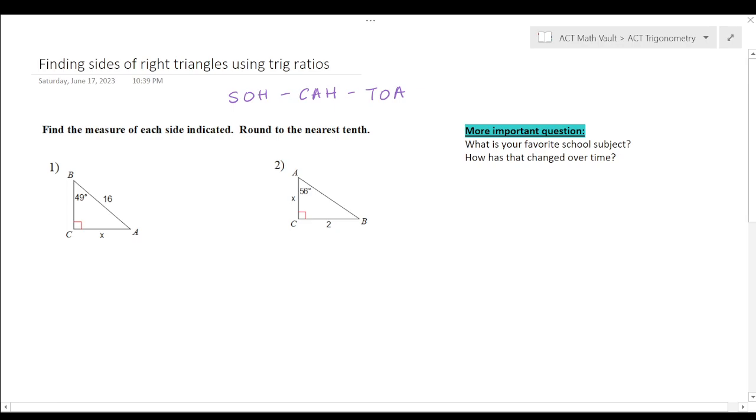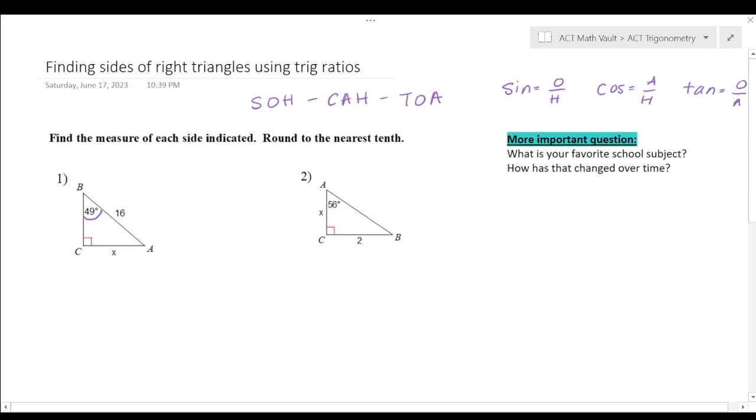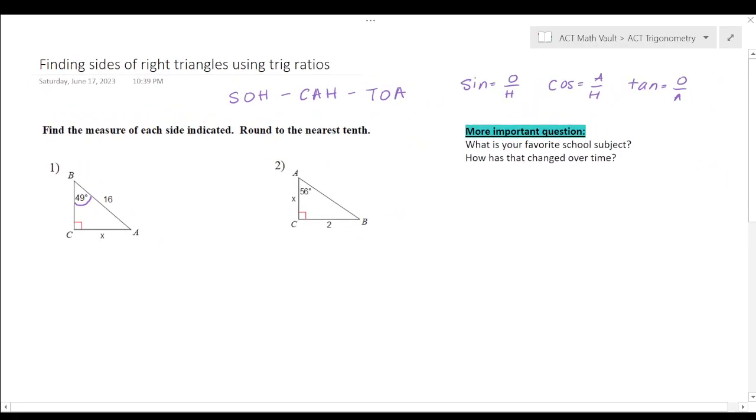So before we do this, we must know SOH CAH TOA, and that tells us that SOH stands for sine equals opposite over hypotenuse, cosine equals adjacent over hypotenuse, tangent is opposite over adjacent. So what does all that mean? Well, first of all we need a calculator, and we're looking for the sine, cosine, and tangent buttons on the calculator. From the angle that you are given in the triangle, you must label the O, the A, and H. The O will always be across the triangle from the given angle. The hypotenuse is always across from the 90 degree angle because that means it's the longest side, if it's across from the largest angle.